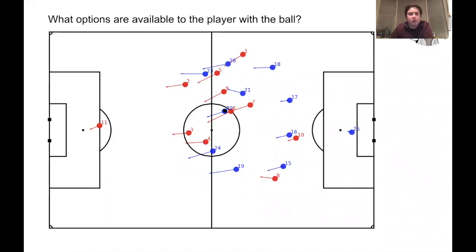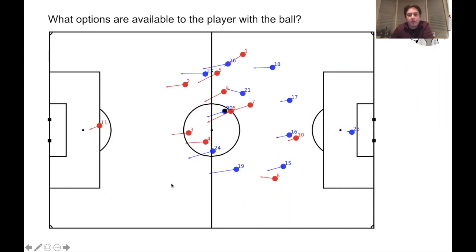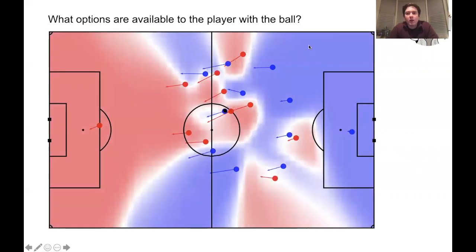In terms of passing options, given the motion of all the teams from right to left, perhaps he has some passing options up in the top left-hand corner of the field and perhaps some down here. Pitch control models enable you to quantify these options directly.